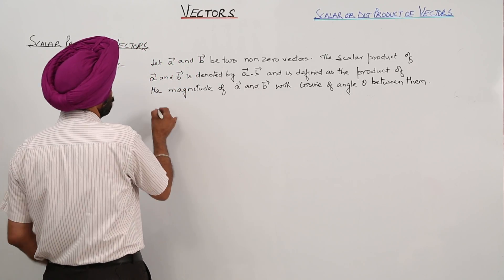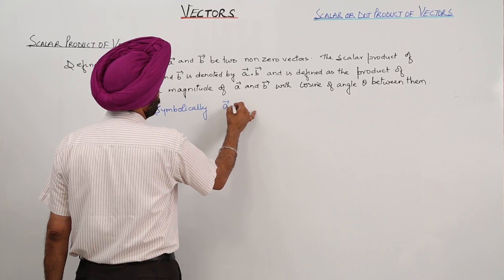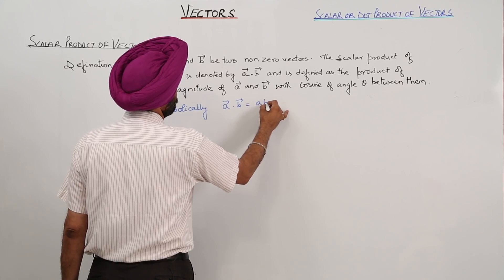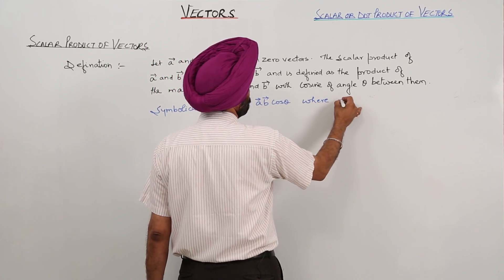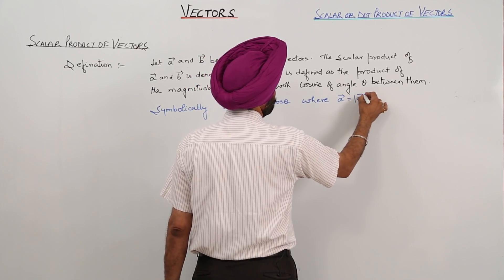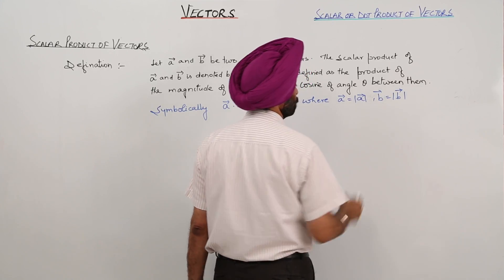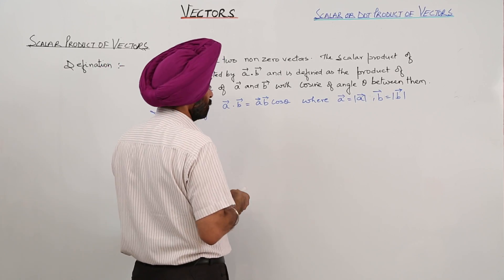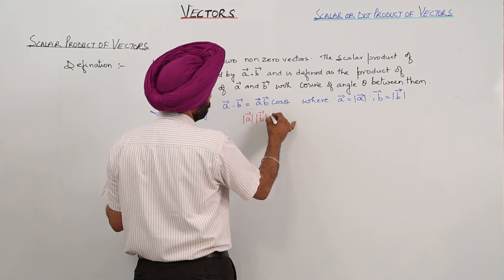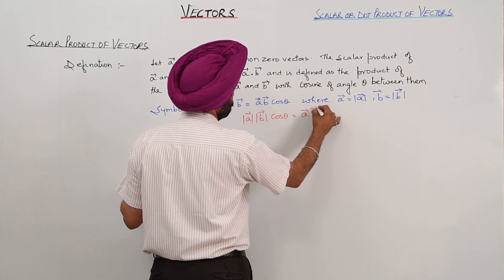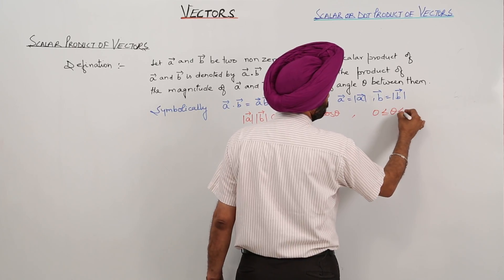Symbolically, we write vector A dot vector B, and this is equal to |A| |B| cos theta, where |A| is the magnitude of vector A and |B| is the magnitude of vector B, and 0 ≤ theta ≤ π.